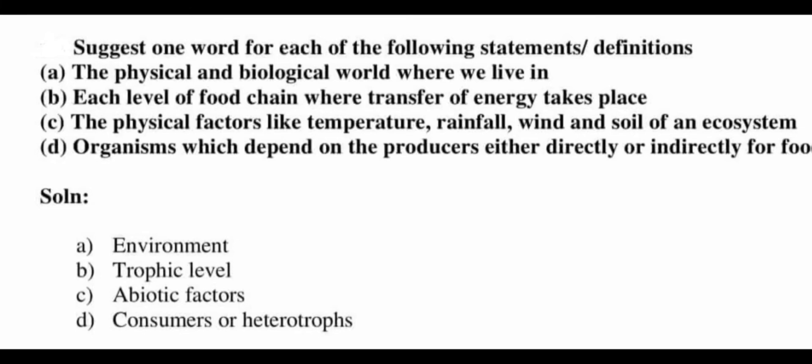C. The physical factors like temperature, rainfall, wind and soil of an ecosystem. D. Organisms which depend on the producers either directly or indirectly for food. The answer is consumers, or otherwise they are known as heterotrophs.